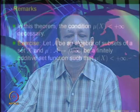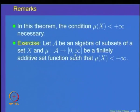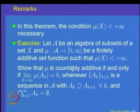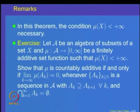The condition that mu(X) is finite is necessary and cannot be removed — you can construct an example using the real line with the length function. Also, the condition that A_n decreases to A can be replaced by requiring A_n to decrease to the empty set, which is also equivalent to countable additivity. We invite you to explore and answer these questions. Thank you, let us stop today.